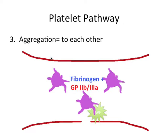We also have a drug called abciximab, which is a monoclonal antibody that binds to the glycoprotein 2b3a complex to block the third step — the aggregation step — of the platelet pathway.